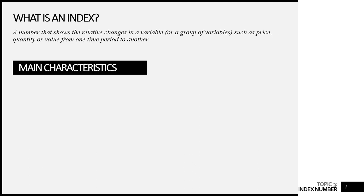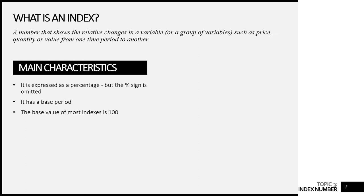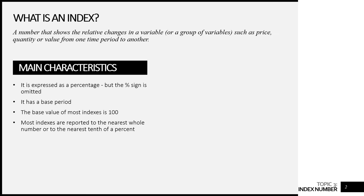There are many characteristics of an index. One of them is that indexes are usually expressed as a percentage; however, we don't normally write the percentage sign behind it. Besides that, there is a base period where we want to calculate the index, and the index value for the base period is usually 100. Most indexes are usually reported to the nearest whole number or to the nearest tenth of a percent — for instance, 105, 102, or 103.9.